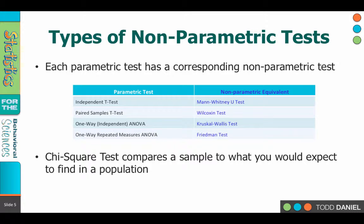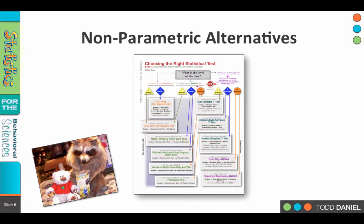The one that we're going to focus on, however, is the chi-square test. The chi-square compares what we find in a sample to what we would expect to find under certain assumptions. The first assumption is that everything is occurring randomly — in other words, everything should pretty well shake out equally. To find out more about the non-parametric alternatives, go to the BEAR handout, and you'll see how each of the parametric tests we've learned has an alternative. Although we're not going to learn how to run each one of them right now, I want you to know that those alternatives are available.